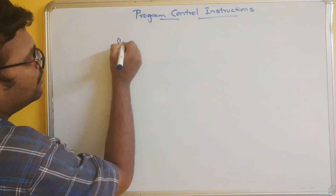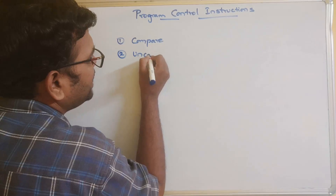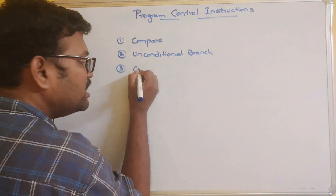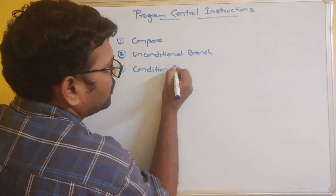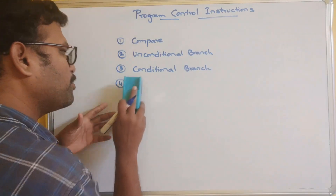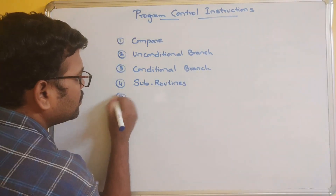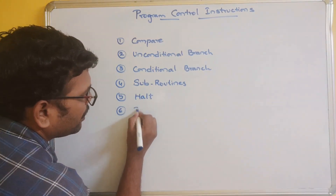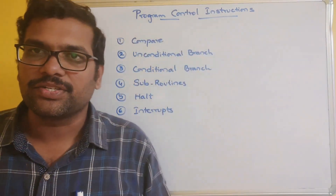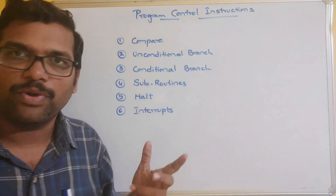Similar to the data manipulation instructions, program control instructions are also classified into different categories. The first one is compare instruction, second one is unconditional branch, third one is conditional branch, fourth is subroutines or procedures, then halt instructions, and finally the interrupts. Now we will see these one by one.